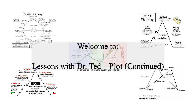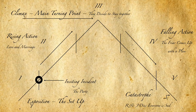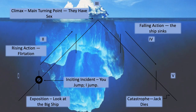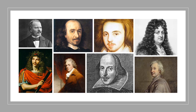Welcome to Lessons with Dr. Ted. This is the third video on plot that I have done as part of a series where I explore and explain Aristotle's elements of drama. Lessons with Dr. Ted Plot Structure Classical saw me analyze Romeo and Juliet according to the five-act structure, also known as Freitag's Pyramid of Dramatic Structure. And Lessons with Dr. Ted Plot Structure Modern saw the analysis of the film Titanic according to the same model. The other two videos go into the definitions and labels in some detail.